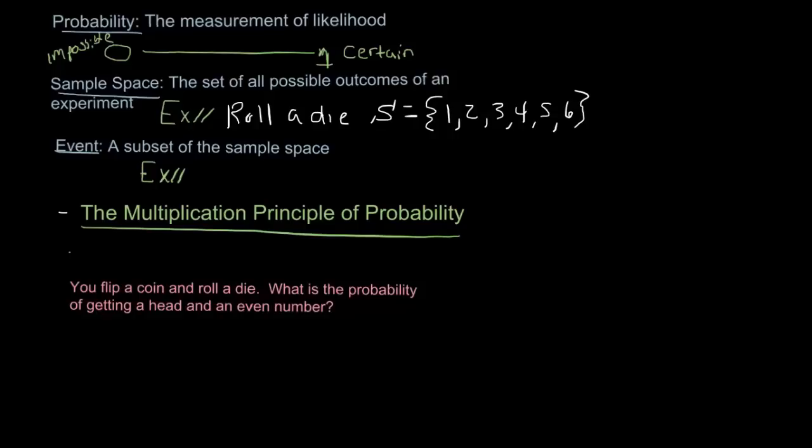An event is a subset of the sample space. So for instance, what if I said in the same experiment, what's the probability of getting an even number? So probability of even number. So getting an even number would be the event. So the event is actually getting the even number. And so here I'm going to make that list. So getting the even number would mean you could get a 2, a 4, or a 6.